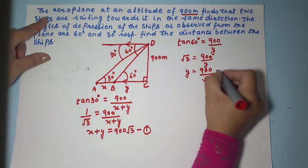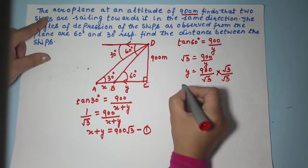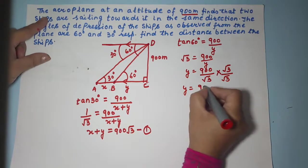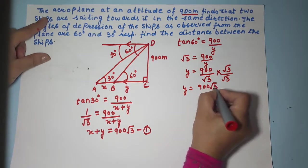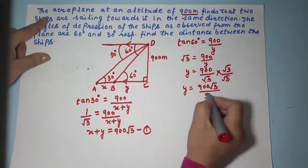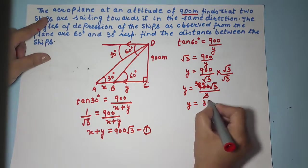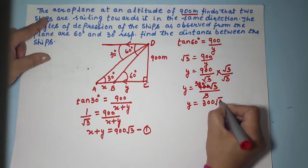So if we rationalize this what do we get? We will get 900 root 3 upon 3. Root 3 into root 3 is 3. So 3 divided by 3 is 1. So you got the value of Y as 300 root 3.